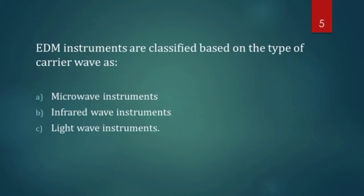Depending on the type of electromagnetic wave that we are using for measurement of this distance transmission and reception we can classify EDM instruments as microwave instruments, infrared wave instruments and light wave instruments. Obviously, as the name indicates microwave instruments will be using microwave for measuring, infrared will be used for infrared wave instruments and light wave will be used for light wave instruments.